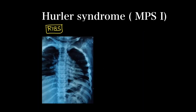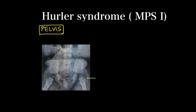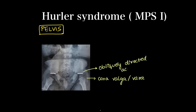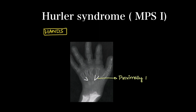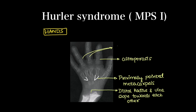In the chest X-ray, we concentrate on the shape of the ribs. There is flaring of the anterior end of the ribs, also called paddle or spatulated ribs. For the pelvis with bilateral hips, there will be coxa valga or vara and obliquely directed acetabular roofs. In the hand X-ray, there will be proximally pointed metacarpals — classic for mucopolysaccharidosis in general. The distal ends of the radius and ulna will be sloping towards each other, with osteoporosis and short, wide phalanges.